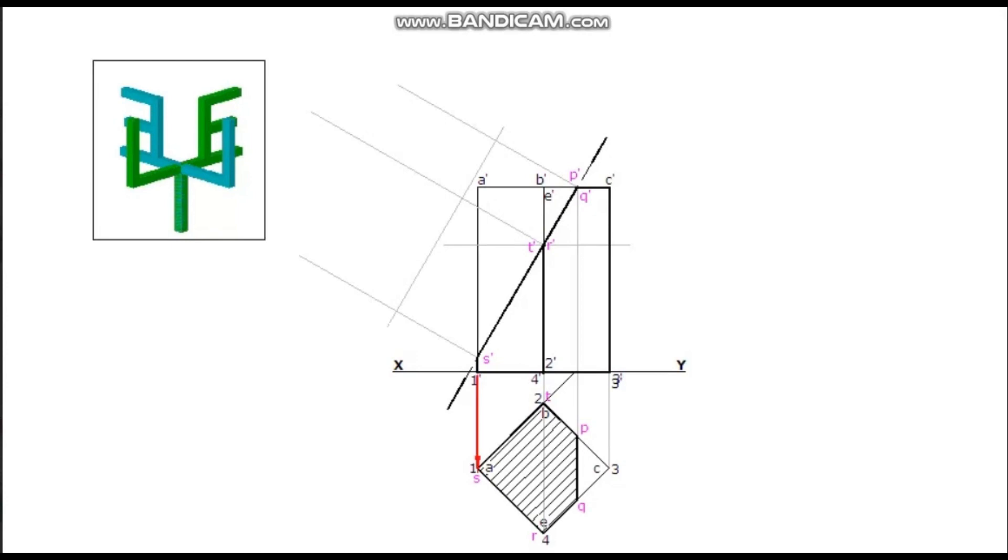Measure distance of point S from the XY line. From the reference line, mark it on the line drawn through S dash. Measure the distance of T. Mark it on the line drawn through T dash.